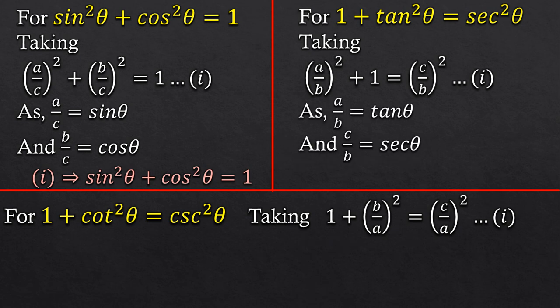Similarly, as a by b equals to tan theta and c by b is equal to secant theta, we got the required identity which is 1 plus tan square theta equals to secant square theta.